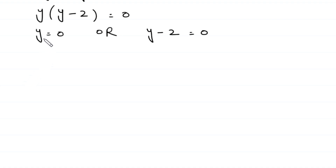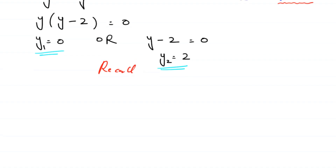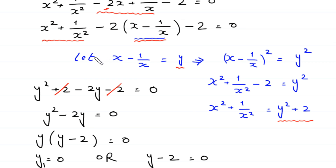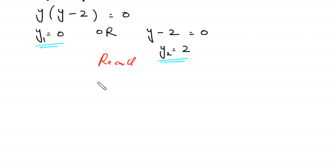From y squared minus 2y equals 0, we factor out y as a common factor, giving y times y minus 2 equals 0. So either y equals 0 or y minus 2 equals 0. Therefore y₁ equals 0 and y₂ equals 2. Recalling that we supposed x minus 1 over x equals y.